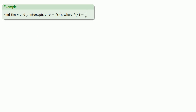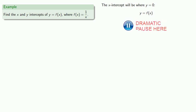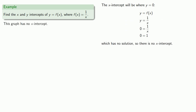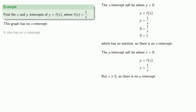A similar situation happens for the graph of y equals f of x, where f of x is 1 over x. The x-intercept will be where y is equal to zero. Replacing and solving, we find we can't solve the equation, so there is no x-intercept. We can try to find the y-intercept, which is where x is equal to zero. But we can't let x be zero, so there is no y-intercept.